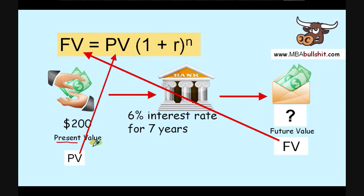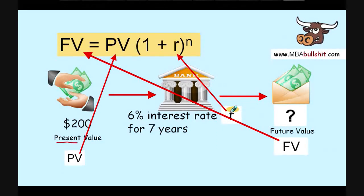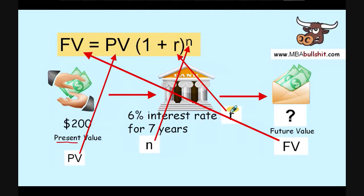This interest rate of 6% is written as the letter R, and that is the same R you see in the formula. Next, we have the number of years — which is 7 — and the number of years is written as the letter N. N stands for number, and it is the same N that you see in the formula.